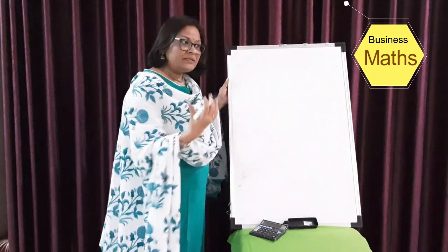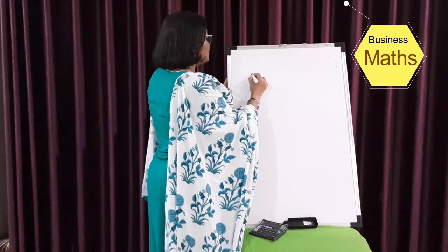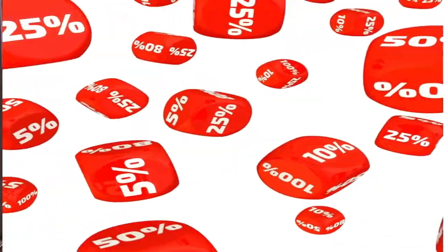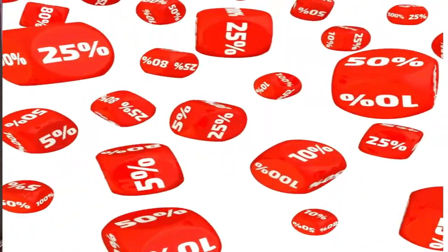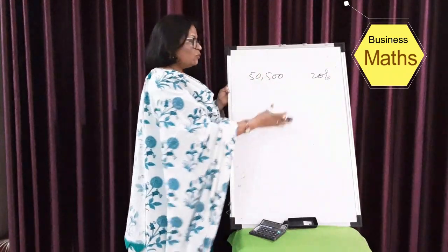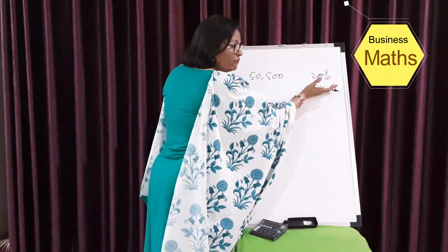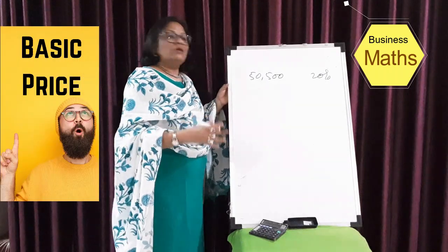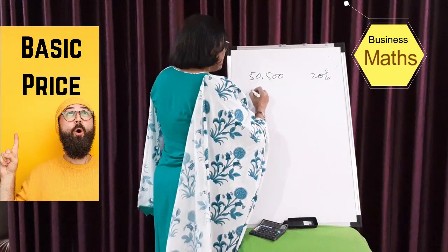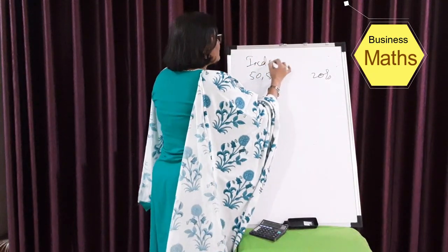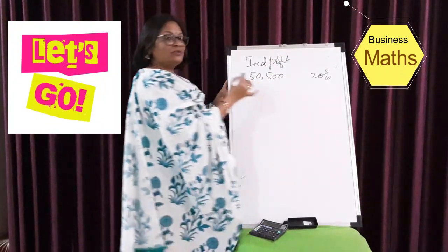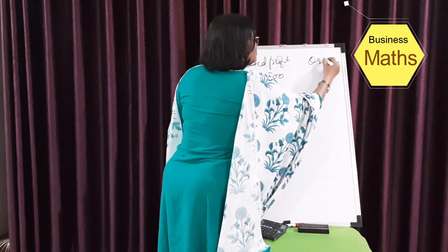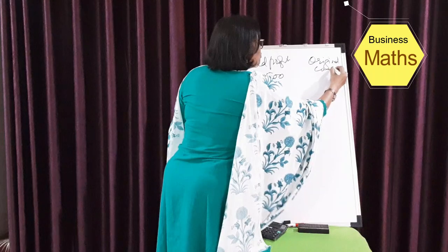Let's take another example. Suppose you sell a product at 50,500 rupees, which gives you 20% profit. What we need to find is the basic cost of that product — the original cost before the 20% profit was added. So this value of 50,500 is inclusive of 20% profit.